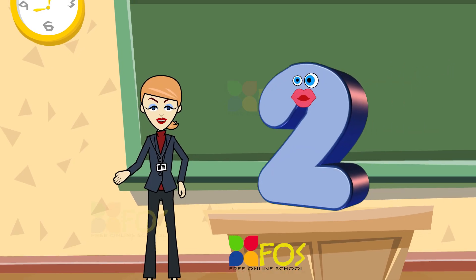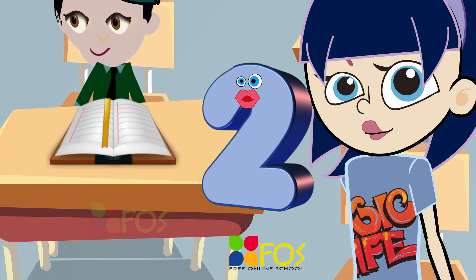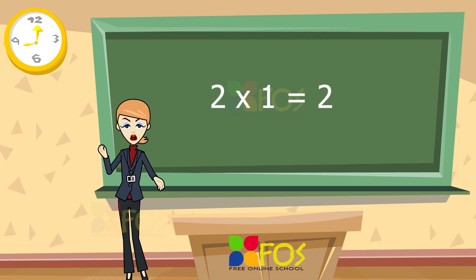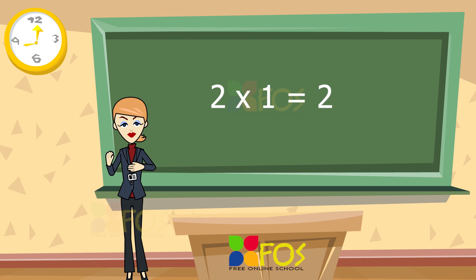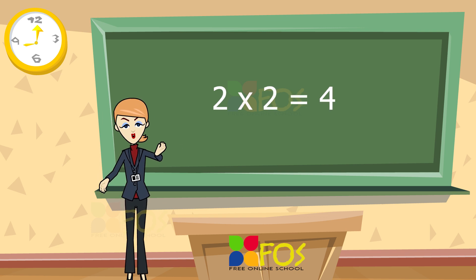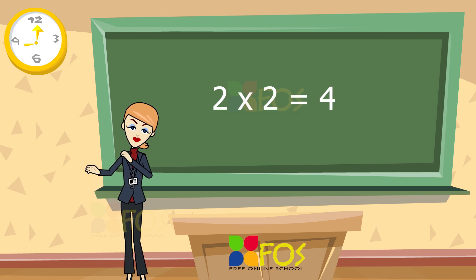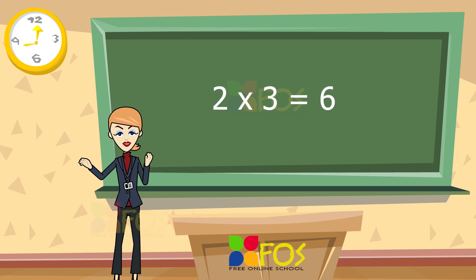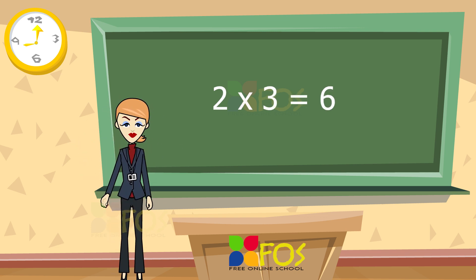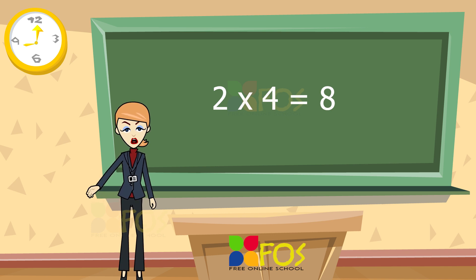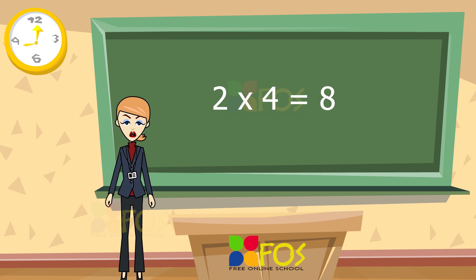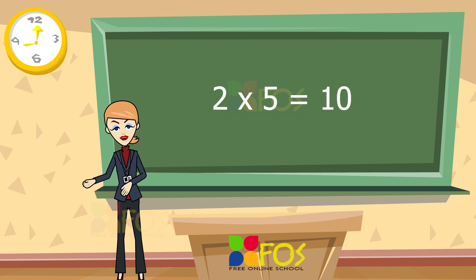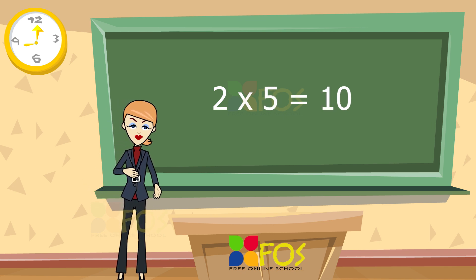Here is the table of two. Two ones are two. Two twos are four. Two threes are six. Two fours are eight. Two fives are ten.